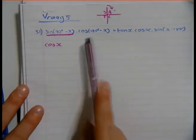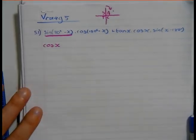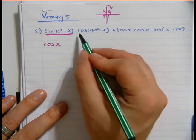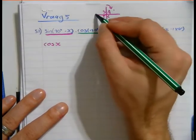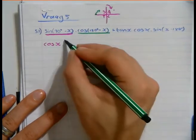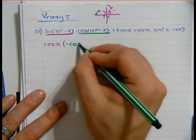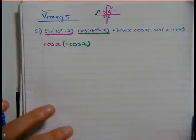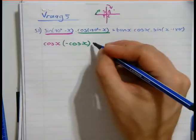Then we go to the next one. There we have 180 minus an angle. 180 is there, minus an angle is there. Cos is negative. Plus.